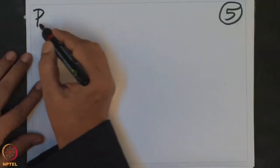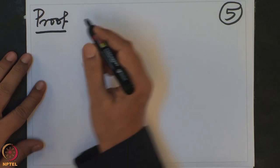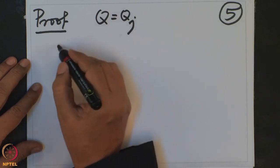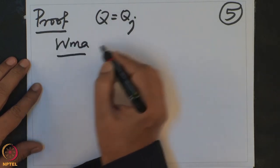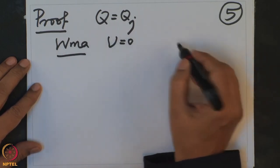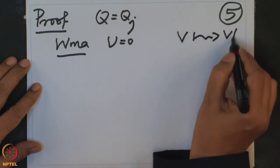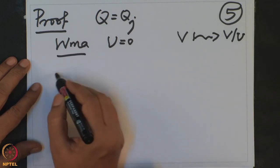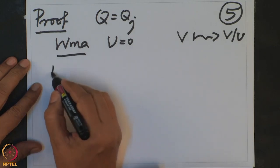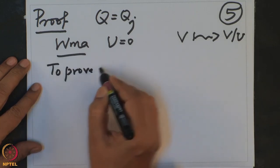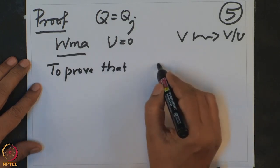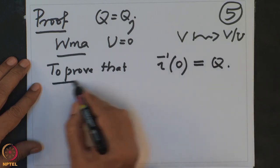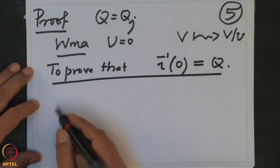Proof. We put Q equal to Q_j and we may assume that U is 0 by passing to V mod U — that is, replacing V by V/U. With this notation, we want to prove that Iota-inverse of 0 equals Q.